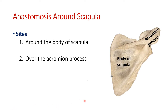Now, coming to anastomosis around the scapula — where exactly does this anastomosis take place? It takes place at two locations. First, around the body and in all the fossae: there are three fossae in the scapula. Two are visible on the dorsal side — the supraspinous fossa and infraspinous fossa — and on the ventral aspect we have the subscapular fossa. Anastomosis occurs in all three fossae. The second site of anastomosis is the acromion process.